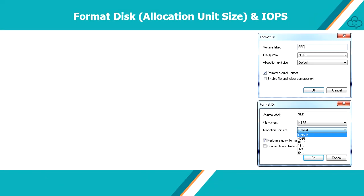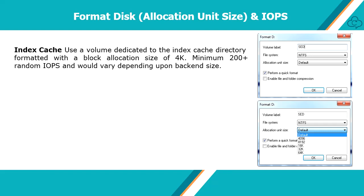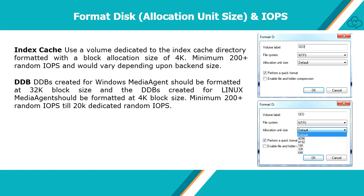Let's check on IOPS requirements, along with what allocation unit size is needed to format a disk drive for index cache, DDB, and disk library. Use a volume dedicated to the index cache directory formatted with a block allocation size of 4K. This volume could be a fixed disk drive, a mounted volume, or a LUN from SAN storage assigned with a drive letter. We need a minimum of 200 plus random IOPS, and this requirement increases as backend data size grows. The deduplication database, or DDB, on Windows should be formatted with 32K block size, and DDBs created for Linux should be formatted with 4K block size. We need a minimum of 200 plus random IOPS for the DDB disk, and as the DDB grows this value can increase up to a maximum of 20K dedicated random IOPS.